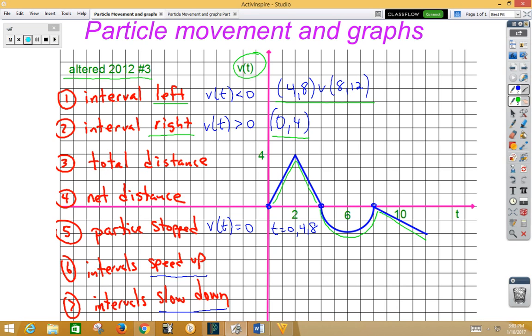Let's take a look at speeding up. From 0 to 2, we have a positive slope. Velocity is positive from 0 to 4. So acceleration and velocity are the same from 0 to 2. We know speeding up from 0 to 2 is happening.